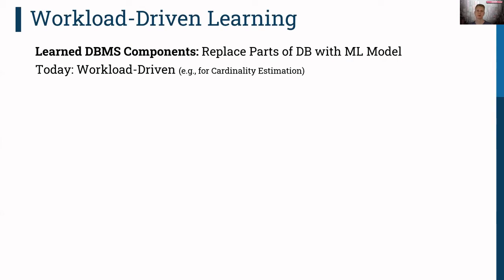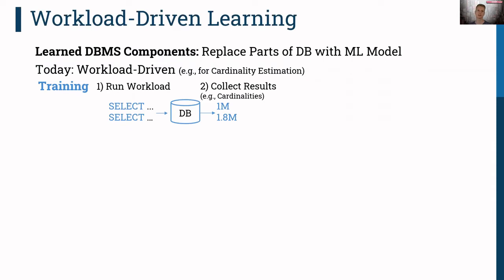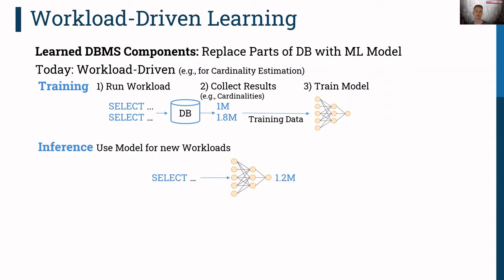Today the predominant approach is workload-driven learning. For cardinality estimation, if you want to train the model, you have to run a large representative workload on a database — many SQL queries — then collect the results, in this case cardinalities, and use this to train the model. At inference time, you featurize the query for which you want to know the cardinality and the model predicts a good cardinality. The results are very compelling.